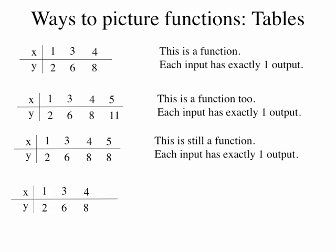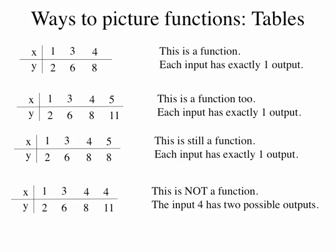What if I put in a 4 again? I've already put a 4 in once and got an 8 out. In order for this relation to be a function, I have to get an 8 every single time I put a 4 in — no guessing. But this time I get out an 11. The next time I put a 4 in, what will I get — 8, 11, or something else? This is not a function. The input 4 is matched to two different outputs, 8 and 11 — one input has two outputs, and that's not okay.